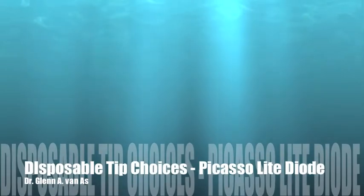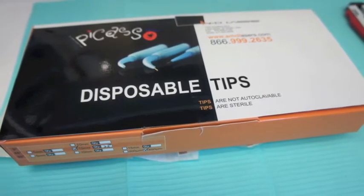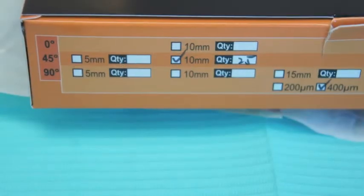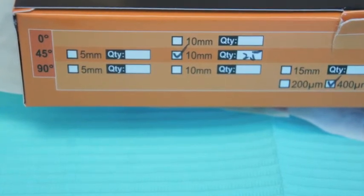Welcome to another edition of Blazing is Amazing with Dr. Glenn Vanass. Today we're going to talk about the Picasso disposable tips. They come in a box here in assorted sizes and in assorted quantities of 25 in each box.